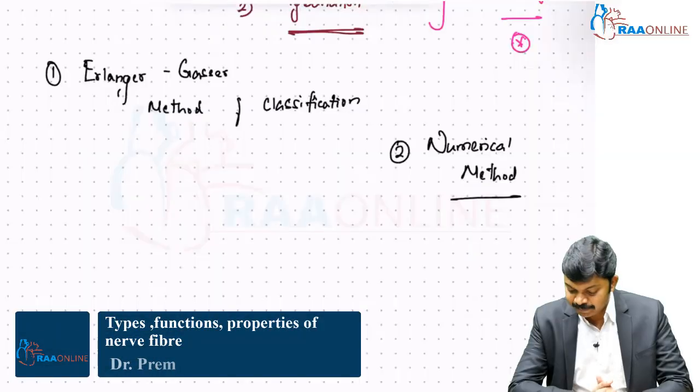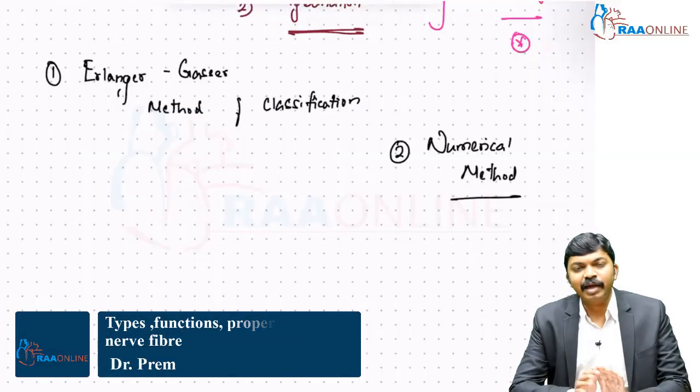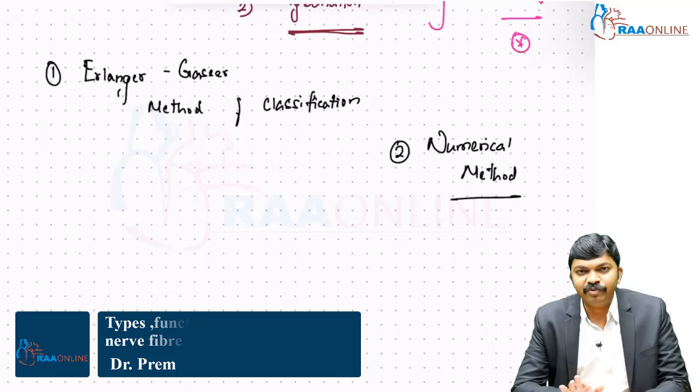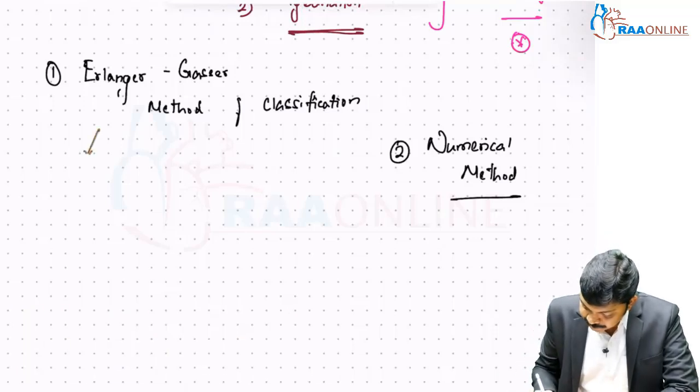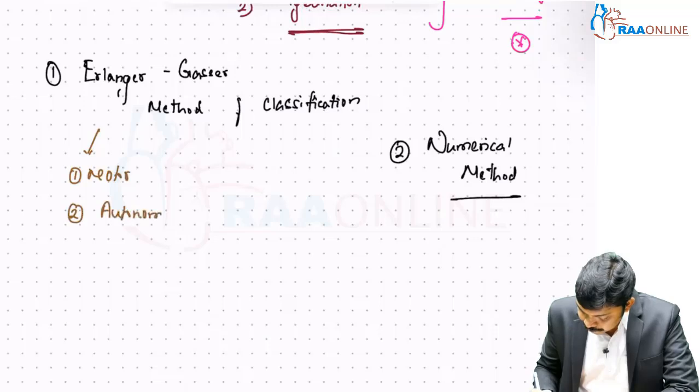Hello guys, Erlanger-Gaser categorizes practically every kind of neurons. Erlanger-Gaser categorizes motor neurons,